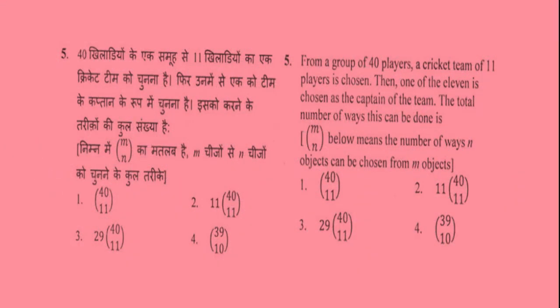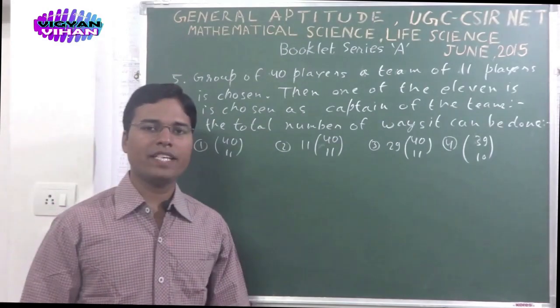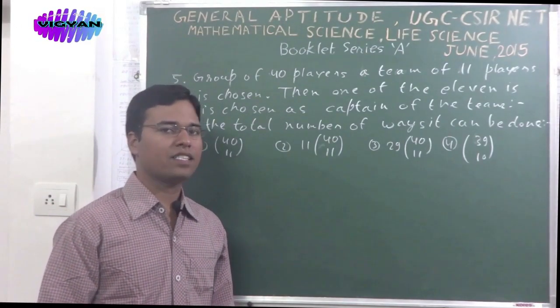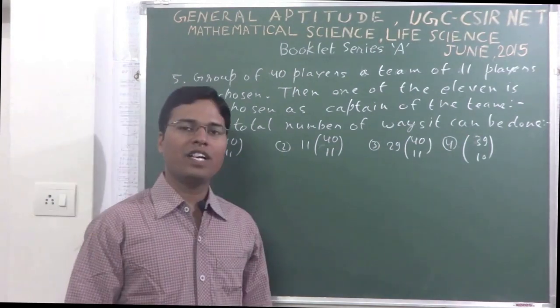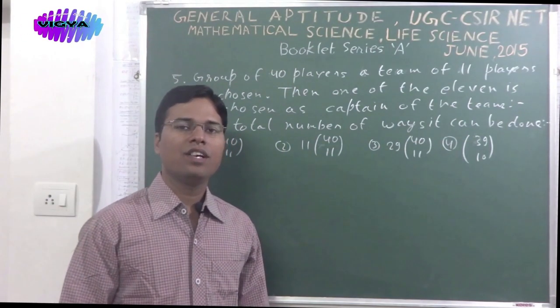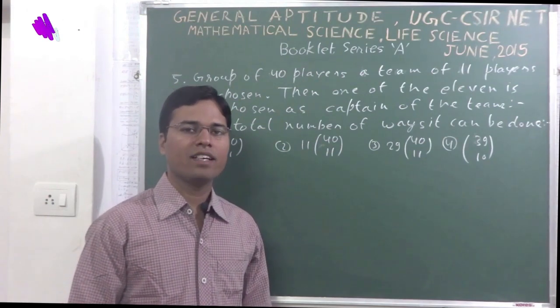Fifth problem. From a group of 40 players, a cricket team of 11 players is chosen. Then one of the 11 is chosen as the captain of the team. The total number of ways this can be done is given using combination notation, where the notation means the number of ways small n objects can be chosen from small m objects. We would have to select the correct answer from the given 4 options. Friends, the next problem is problem number 5. In this problem, there is a group of 40 players. First, we would have to choose 11 players to make a cricket team. Then one player out of 11 would be chosen as captain of that team.